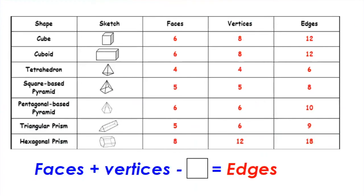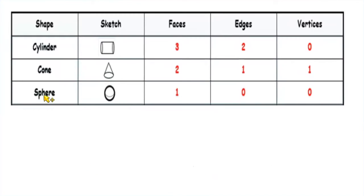There is also a formula you can use for all 3D shapes with polygon bases. When you add the number of faces and vertices and then subtract two, you always get the number of edges. So: faces + vertices − 2 = edges. For example, if a shape has six faces and some vertices, you can use this formula to find the number of edges.